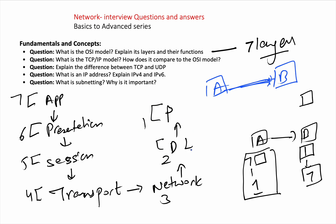Going from layer one upward: the Network layer tells you how the packet will flow — it is basically about routing, how data finally travels through the network. After that, the Transport layer provides end-to-end communication between applications. It handles segmentation, reassembly, flow control, and error recovery.